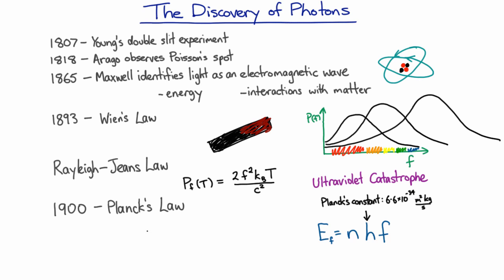So having made this assumption, Planck managed to get the following law for the spectral radiance. Now the Rayleigh-Jeans law was correct at low frequencies and went wrong at high frequencies. Now Planck's law agrees at low frequencies, but it also gets this curve and the way it dips down again correct at high frequencies, and so it gets the spectral radiance for a blackbody correct.